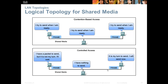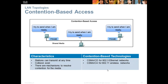The logical topology is not how the network is physically laid out, but how it works. There are two ways to control the logical topology: contention-based access and controlled access. With contention-based access, all stations can theoretically transmit at the same time; collisions can happen unless we have a switch, and there are mechanisms to resolve contention. Contention-based technologies are Ethernet (802.3) and wireless (802.11).